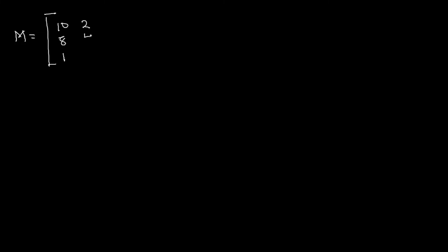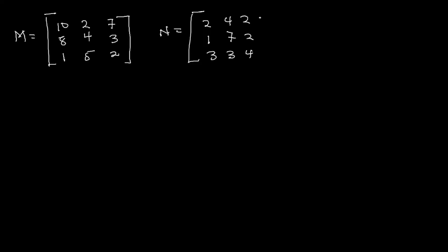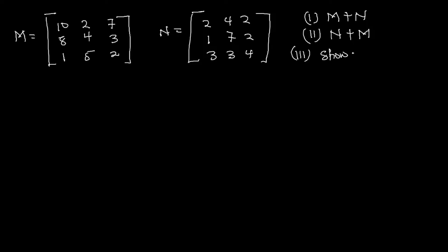So with this basic introduction to addition of matrices, let's look at an example. Example number one: matrix M is given by 10, 8, 1, 2, 4, 5, 7, 3, 2 and matrix N is given by 2, 4, 2, 1, 7, 2, 3, 3, 4. We have to find: (i) M plus N, (ii) N plus M, and (iii) show whether addition is commutative.